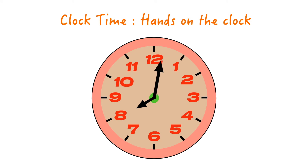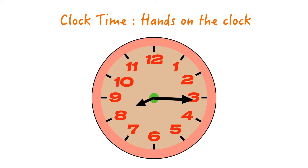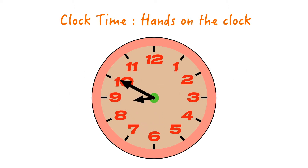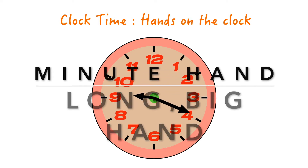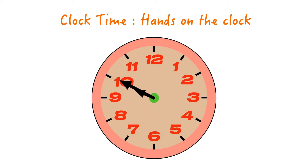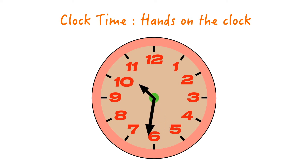We were learning about what the small hand on the clock means and the big hand on the clock means. We say the number that the small hand is pointing to first. The minute hand is the big hand on the clock and it's going to the next number. When the big hand gets to the 12, it's going to be another time. When the big hand is on the 12, we call it o'clock.